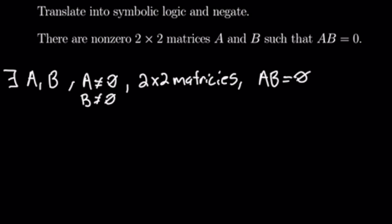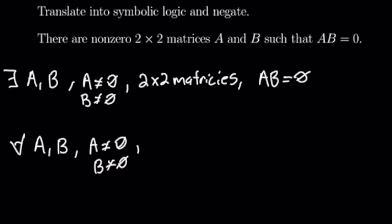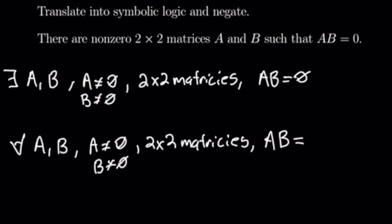And now we're going to go ahead and negate that. We'll have: for all A and B where A and B are not equal to zero, and they are two by two matrices, A times B does not equal zero. In other words, there are no cases where the original statement is true.